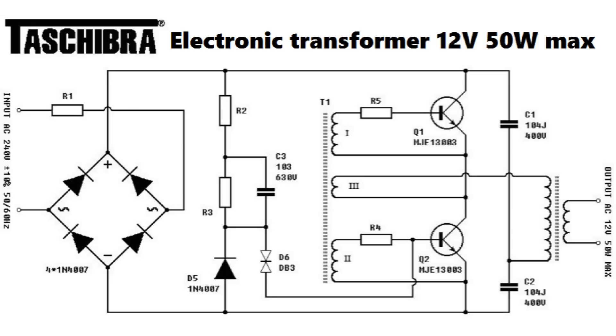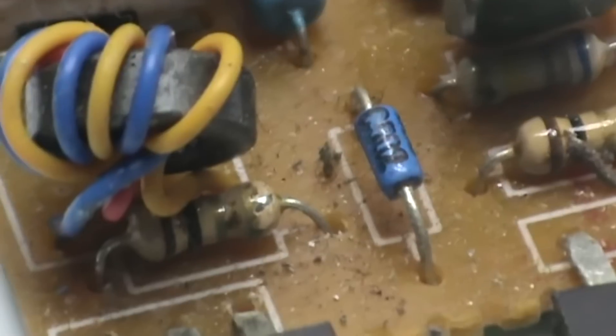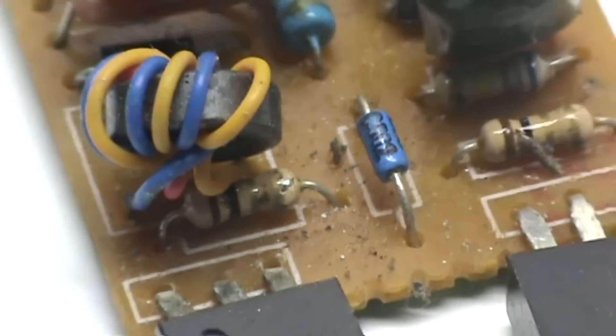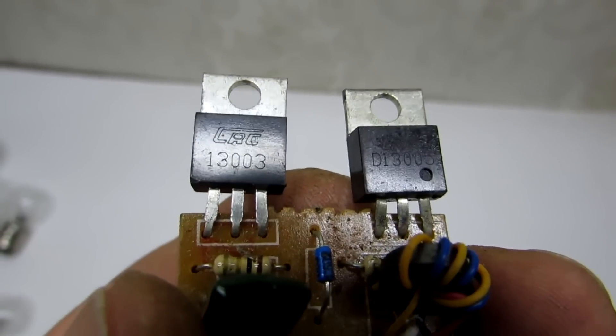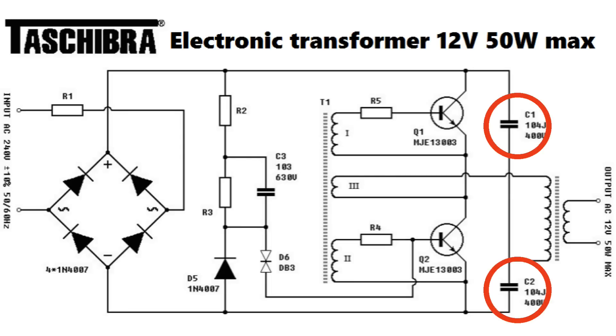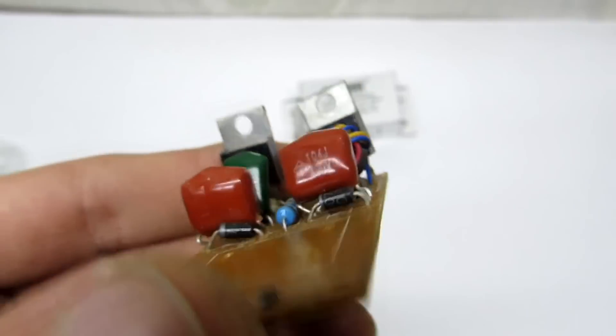Circuit is a simple two-stroke half-bridge inverter. Auto-generating runs on the basis of symmetric dynistor, which is supplying the initial impulse for the launch. There are two high-voltage transistors, 13003. Two capacitors, 0.1 microfarad, 400-volt.